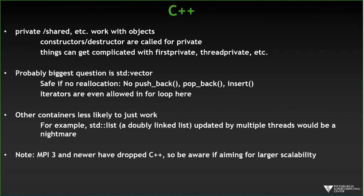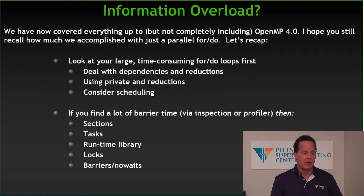If you have greater concerns, look in the documentation — there are examples, walkthroughs, and a lot of considerations to give you hints and get your head in the right place. One thing I feel compelled to point out is that MPI 3 has dropped C++. So if you're thinking of this as the beginning of something that's really going to scale up very large, be aware of that. This often dovetails with MPI-type efforts.